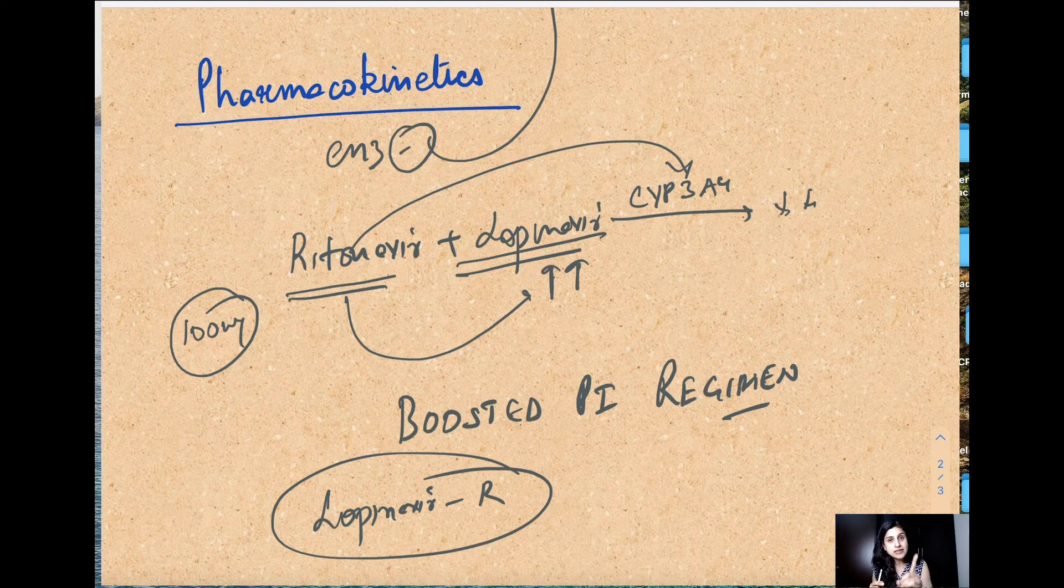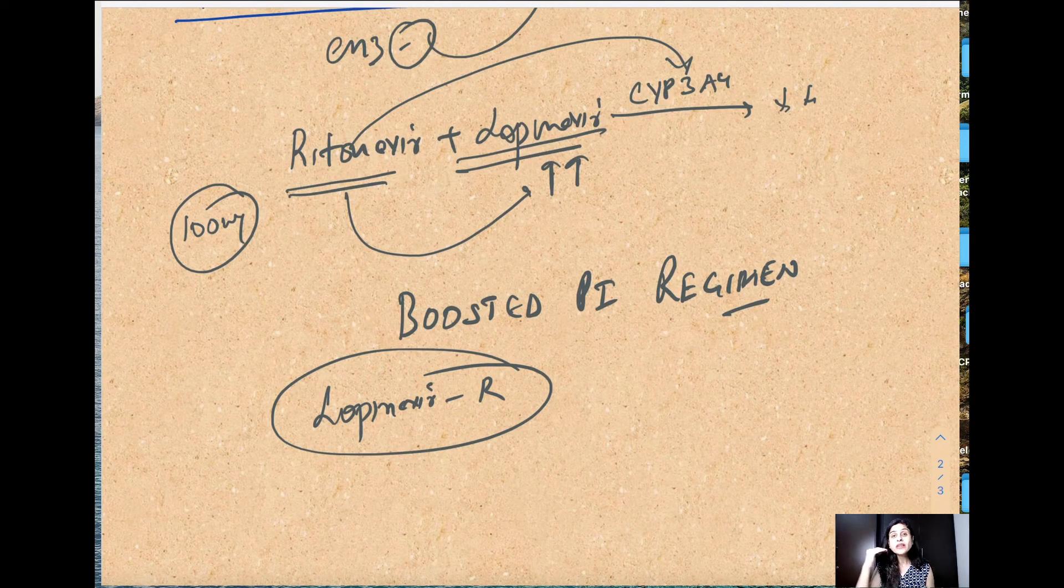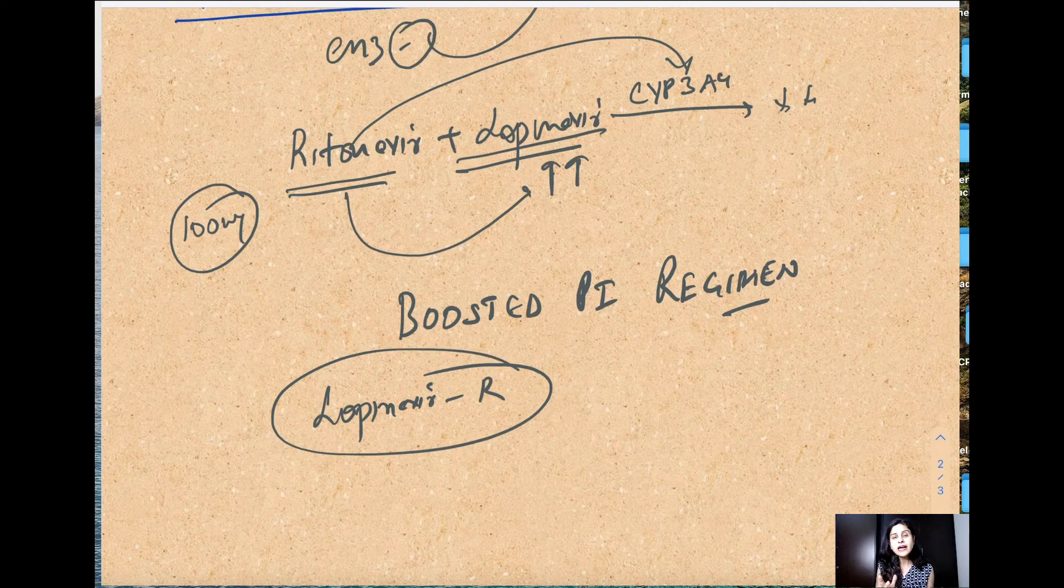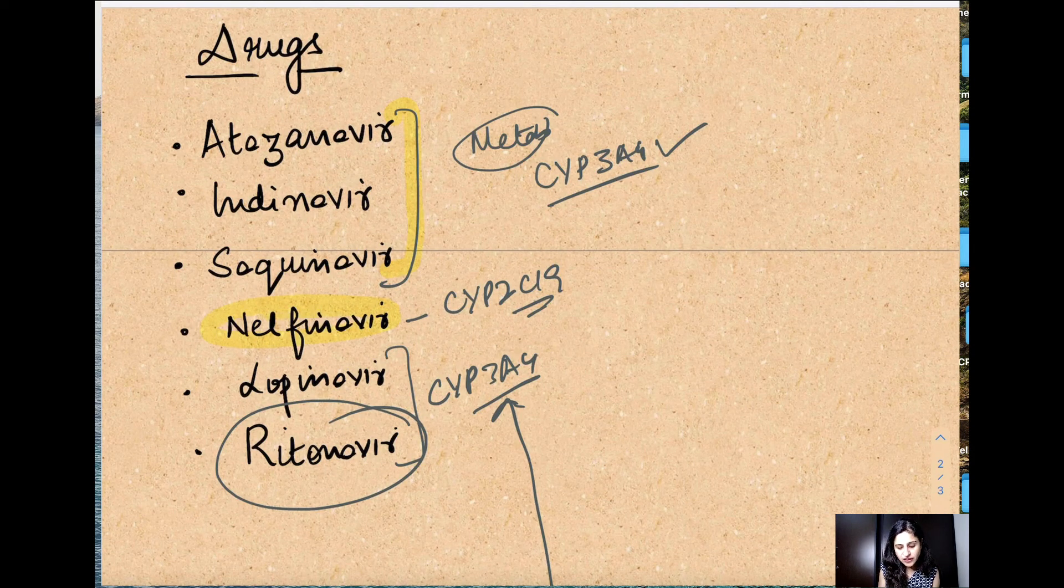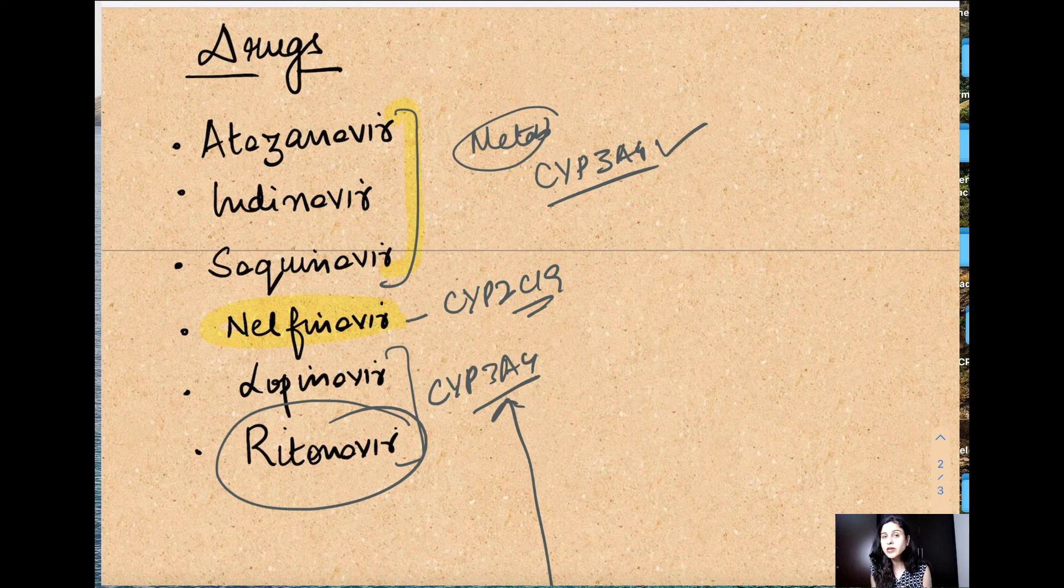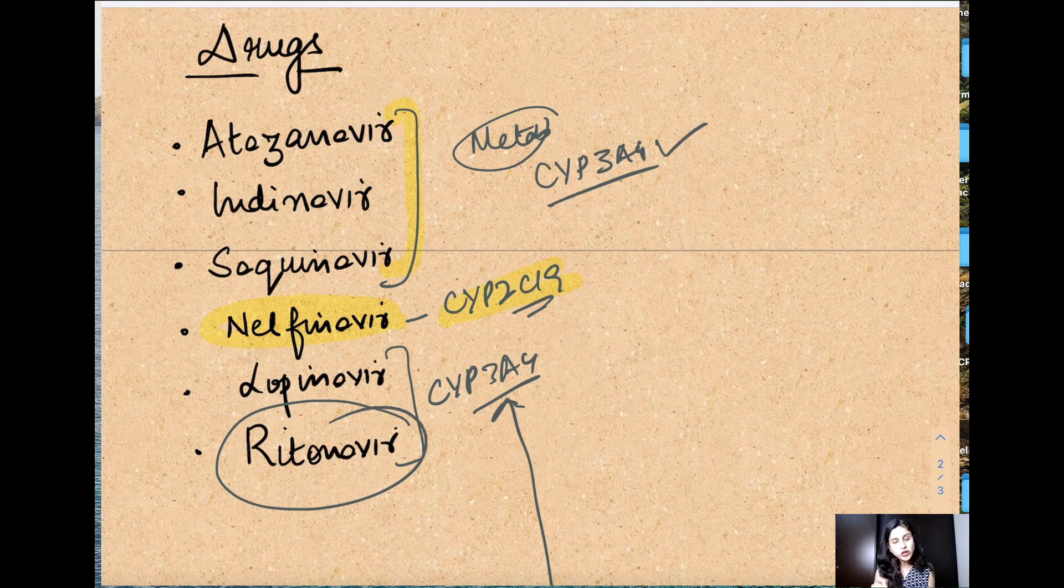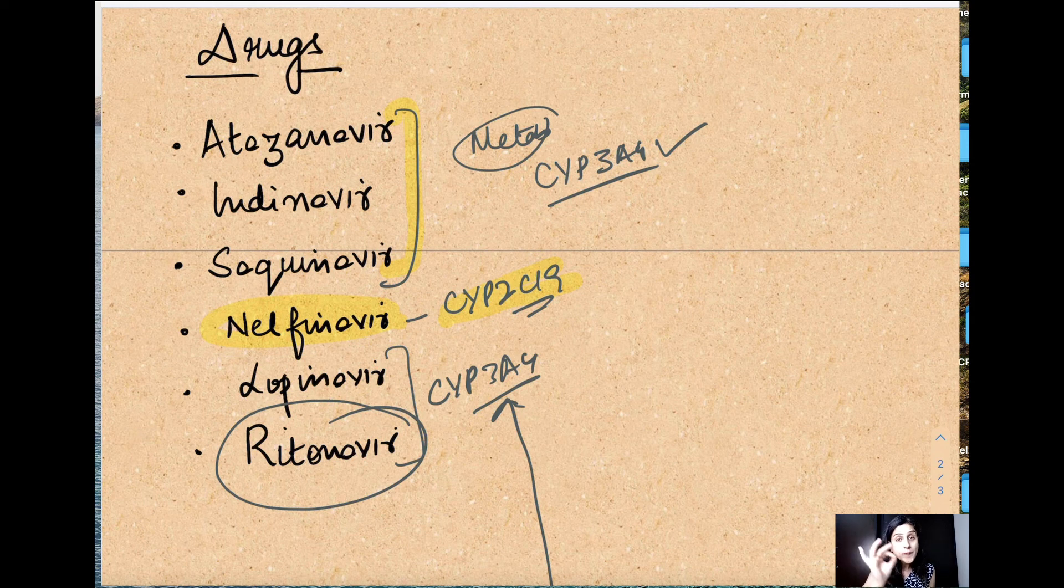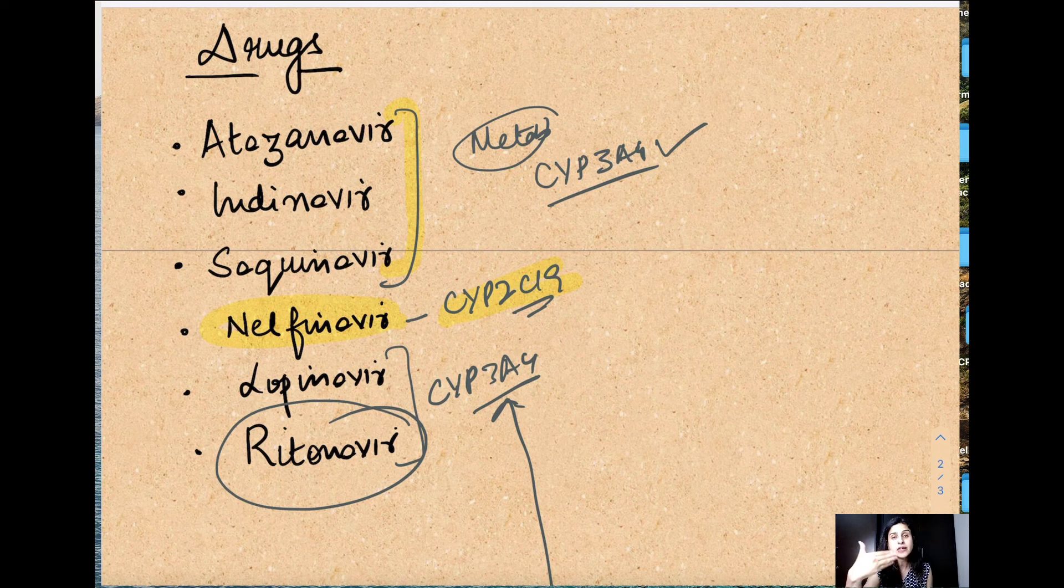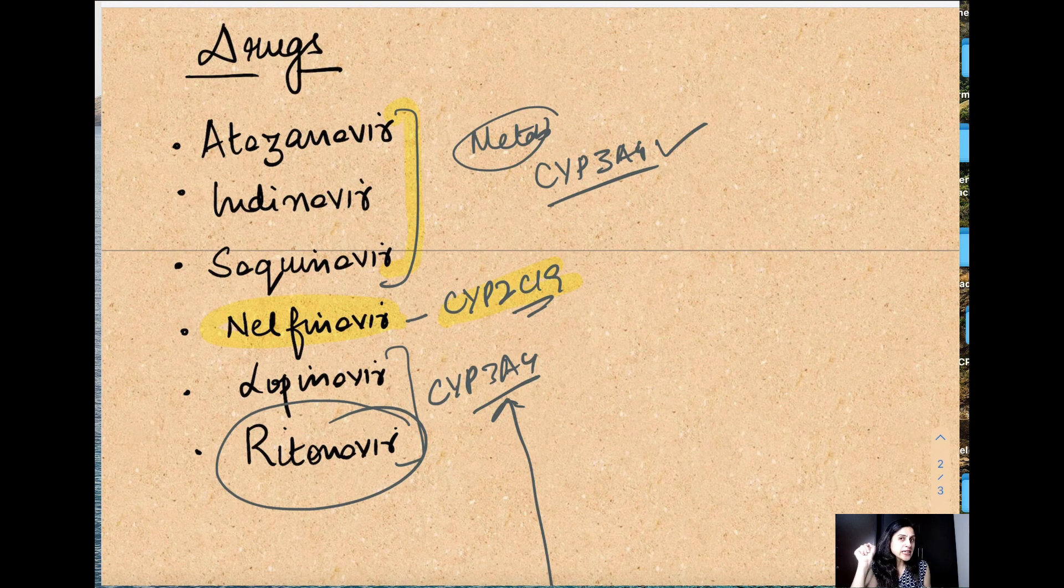One exception to the rule - just remember which is that protease inhibitor with which ritonavir doesn't have the boosted effect. If you see here, I've already told you that nelfinavir is not metabolized by CYP3A4. There is no way ritonavir can boost its effect because the enzyme substrate is different. So there is no use of giving ritonavir with nelfinavir, while in the case of other drugs we can give. This is called the boosted PI regime where ritonavir boosts the effect of other protease inhibitors because it is a potent inhibitor of CYP3A4.